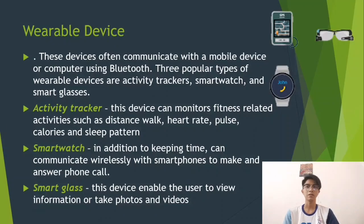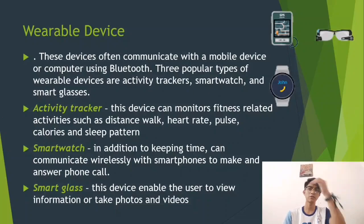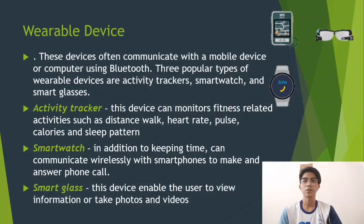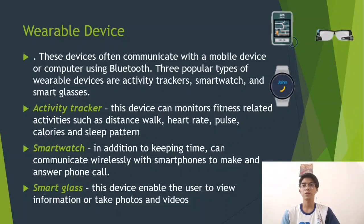An activity tracker can monitor fitness-related activities such as distance walked, heart rate, pulse, calories, and sleep patterns. A smartwatch, in addition to keeping time, can communicate wirelessly with a smartphone to make and answer phone calls. Smart glasses enable the user to view information or take photos and video.